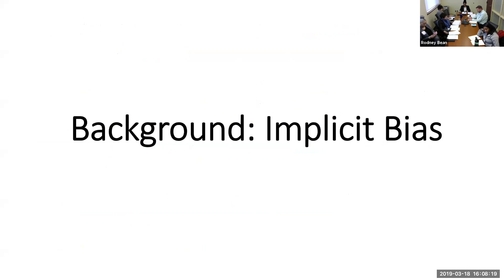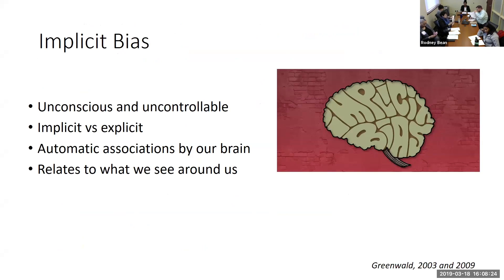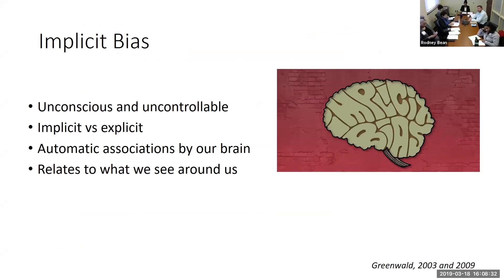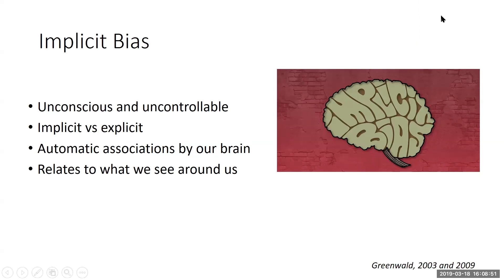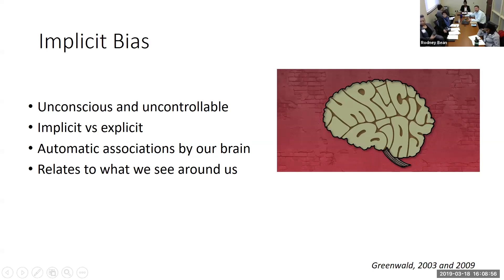Implicit bias is an unconscious and uncontrollable association made by a person, compared to explicit biases that are conscious and deliberate. We can say that we explicitly believe in equity, but then unintentionally act in a way that is biased and discriminatory. In everyday life, people experience automatic, spontaneous thoughts, feelings, and behaviors that are different from what they desire — like bad habits such as biting fingernails. These things are both unintentional and extremely difficult to control.